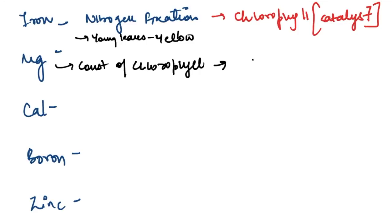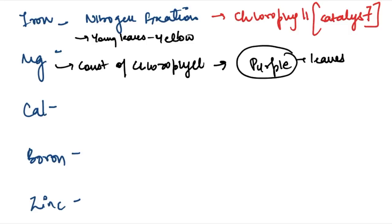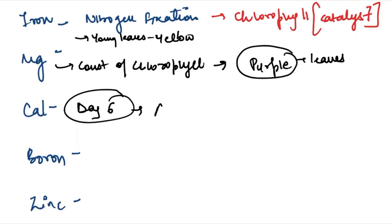Some plants have purple leaves because of a deficiency of magnesium. Magnesium is the central atom of chlorophyll, which is responsible for the green color of leaves. For calcium, I have already discussed it on Day 6 of the ARD question series — please refer to that video.